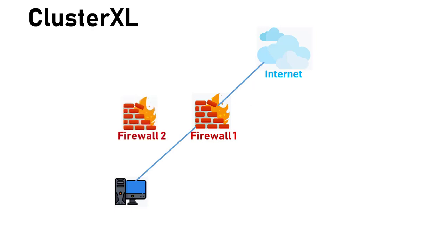So we have firewall one and firewall two. Let's say it is a cluster, and right now the traffic is being passed through firewall one. The second firewall, firewall two, is just watching what is happening to firewall one to be able to pick it up. To properly define a cluster we need to have three components. The first one is called redundancy, meaning that your solution is redundant. If firewall one fails, firewall two will pick it up.